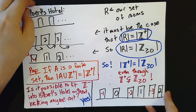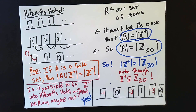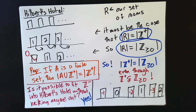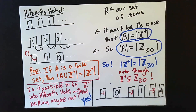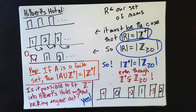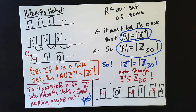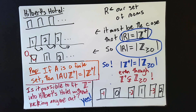It's tempting to wonder: is there any set that couldn't fit into the hotel? You might think about the rational numbers or the real numbers and ask whether some shuffle of the integers could accommodate them into these rooms. That's really the gist of what we're getting at in this chapter. We want to formally and rigorously understand exactly what it means for a set to fit into Hilbert's Hotel or not, and how to prove that a set does or does not have that property.